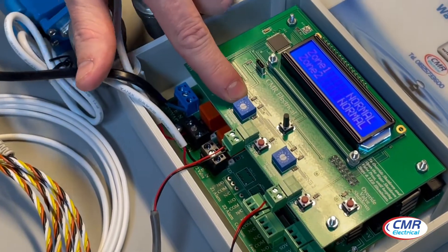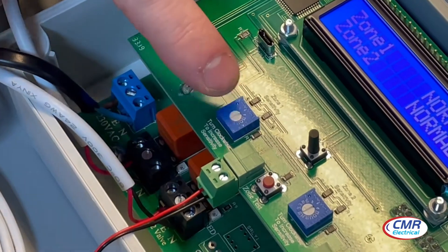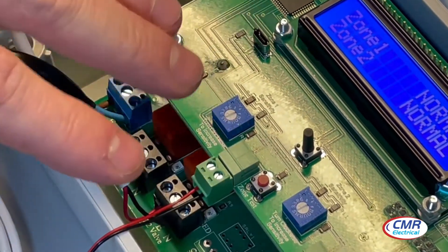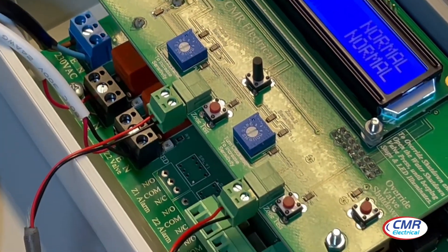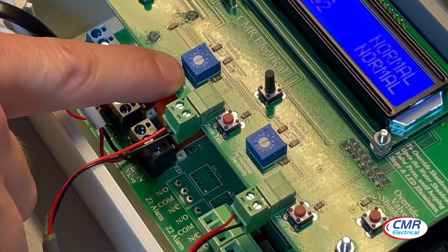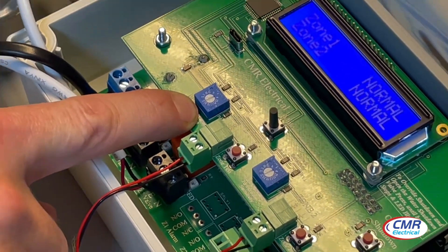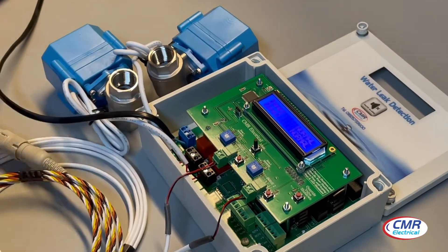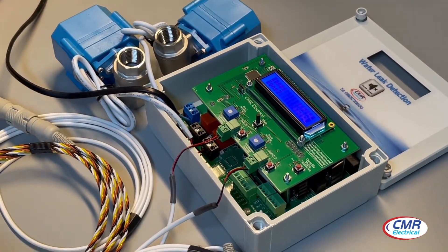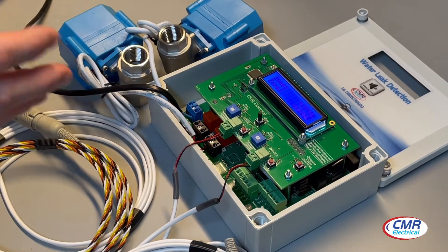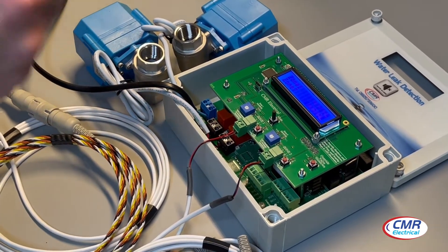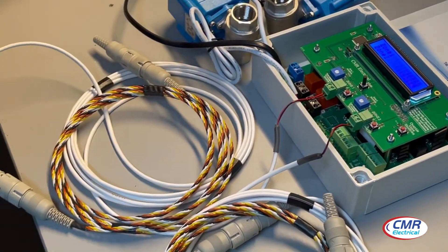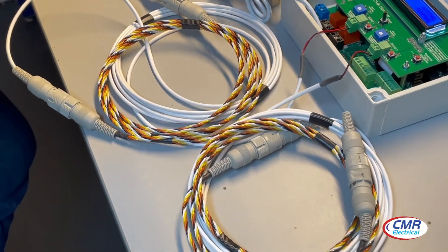These blue pots here are the sensitivity adjustment pots. You get one per zone, so if you have a two-zone system you will have two. You turn it anti-clockwise to desensitize it and clockwise to sensitize it. Depending on the areas, if you have a slightly damp area that's triggering your alarm, you can desensitize that zone to stop the alarms from occurring.